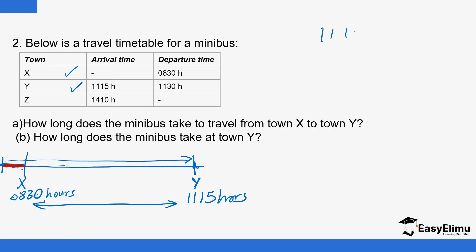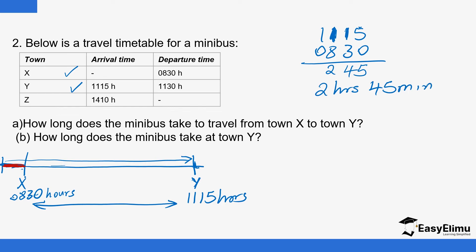So we have 11:15 minus 08:30. You cannot subtract 30 minutes from 15 minutes, so you borrow one hour from 11 hours, giving 75 minutes minus 30 minutes equals 45 minutes. The hours become 10 minus 8 equals 2 hours. So the journey from X to Y took 2 hours and 45 minutes.